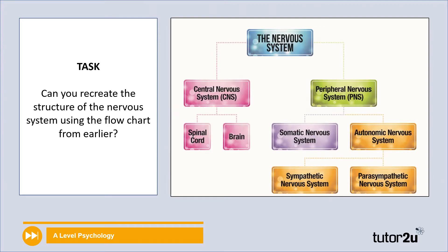Let's see how you did — check your answer versus the diagram on the board. We should have the nervous system at the top. Then there are two branches: the central nervous system on one side, with subcomponents the spinal cord and the brain underneath. The other branch is the peripheral nervous system, with subcomponents the somatic nervous system and autonomic nervous system. And then within the autonomic nervous system, hopefully you managed to get the sympathetic and parasympathetic in there as well.